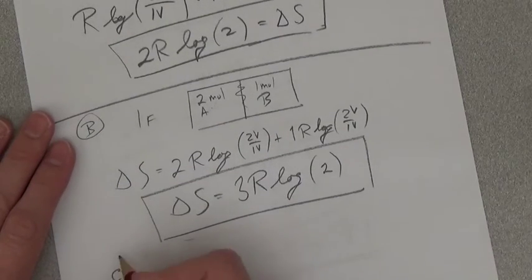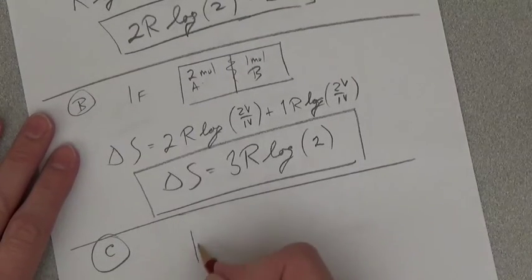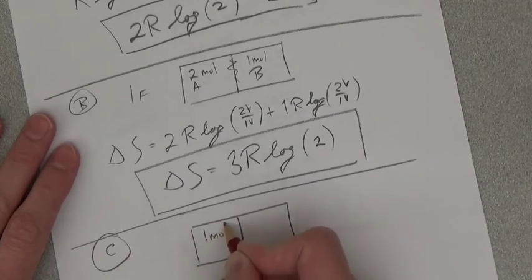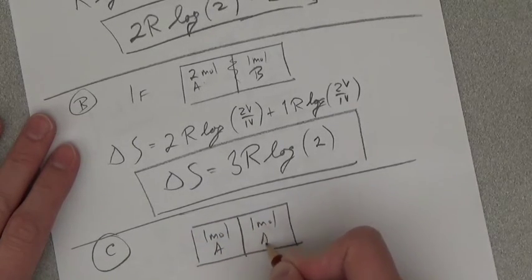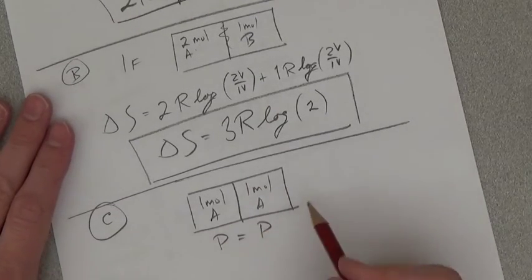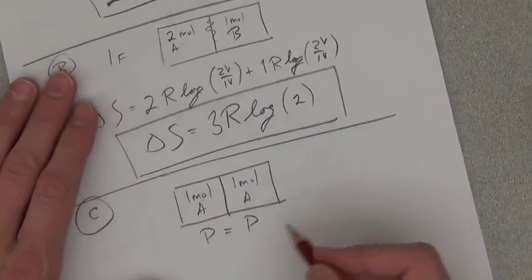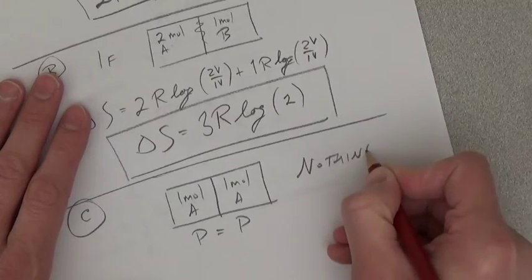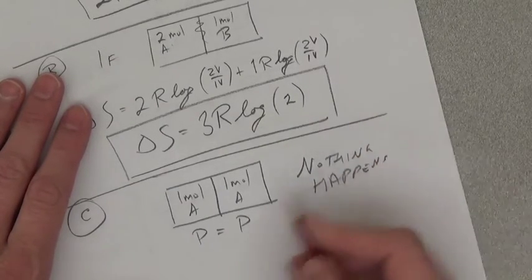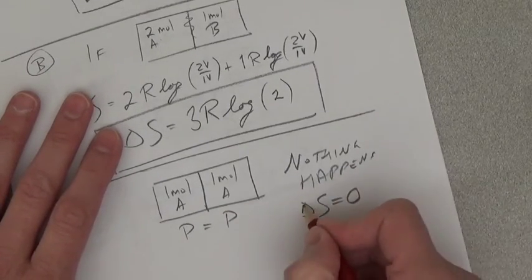Question C is equal to 1 mole of A. What happens? When we remove the partition, which means delta S is equal to 0.